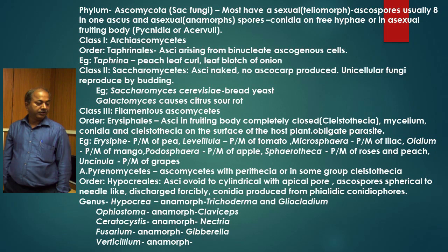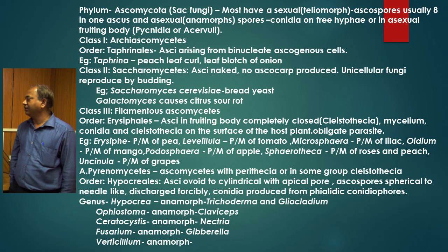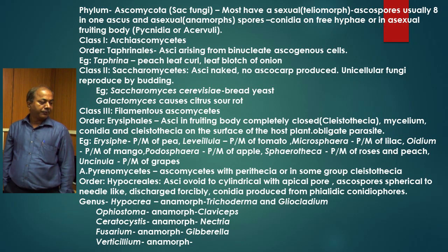The third class is filamentous Ascomycetes. In this, the order is Erysiphales. In the Erysiphales order, asci are produced in a fruiting body that is completely closed, called a cleistothecium — a completely closed ascocarp is known as a cleistothecium. The Erysiphales order contains the powdery mildew fungi.